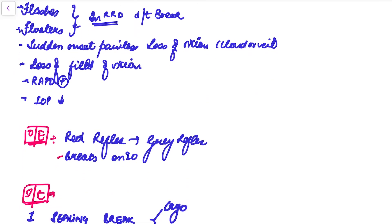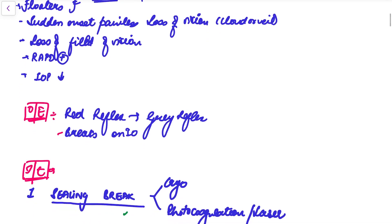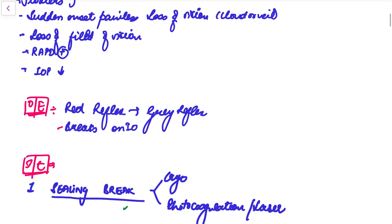On examination: normally there is a red reflex present when we examine the patient's fundus after dilating the pupil. But due to retinal detachment, the red reflex will be converted to a gray reflex. If we do indirect ophthalmoscopy, we can see the break in rhegmatogenous retinal detachment.